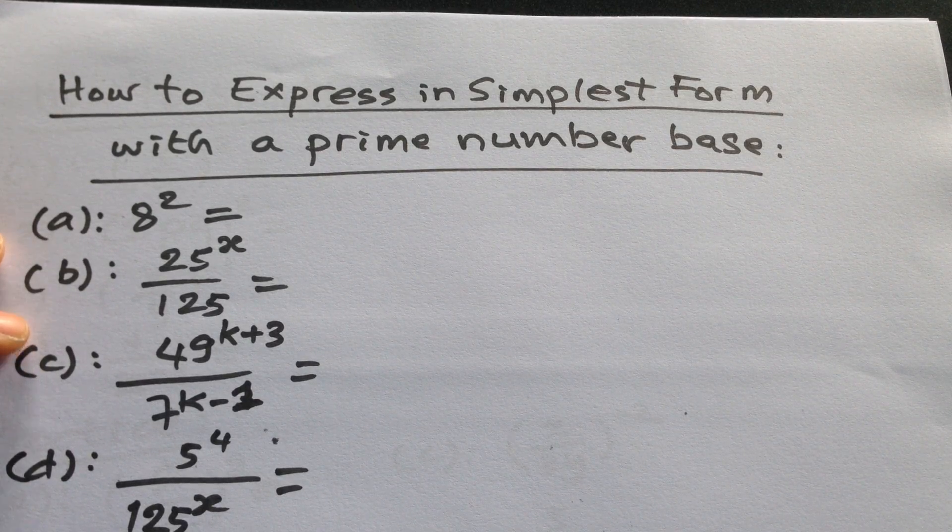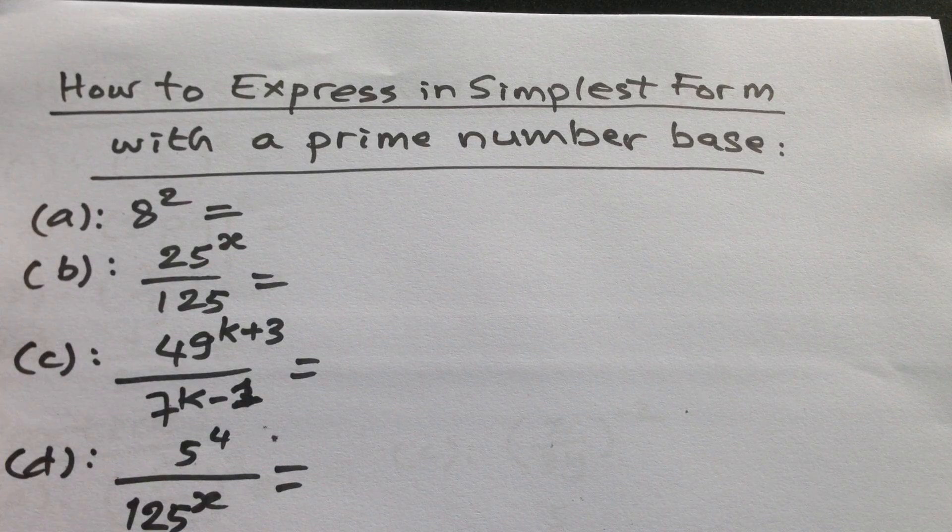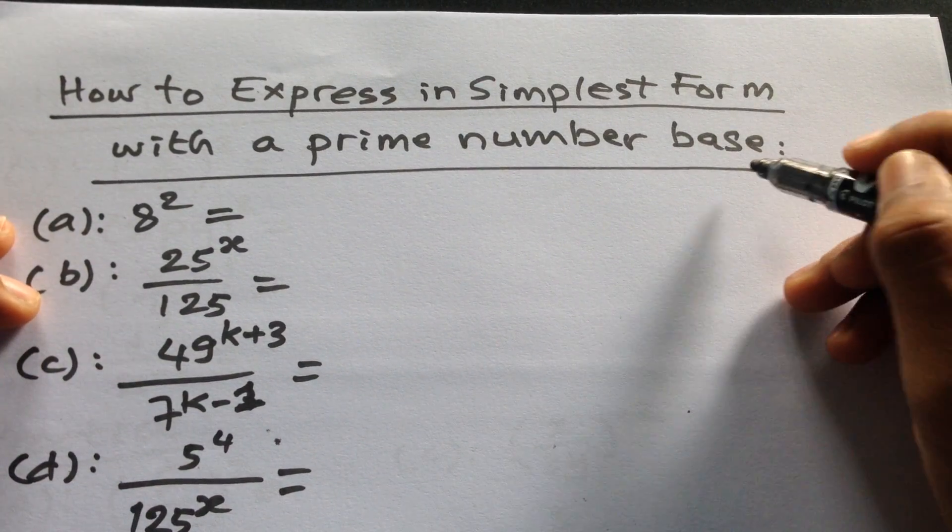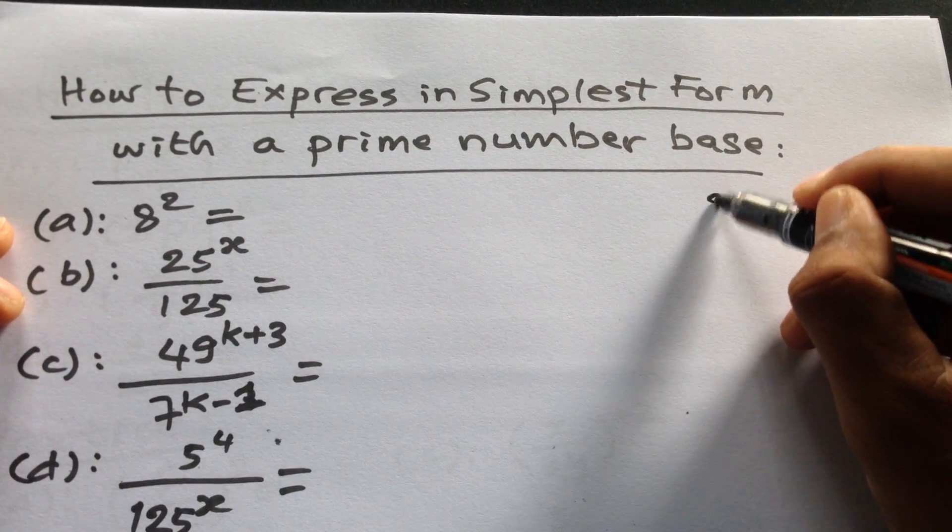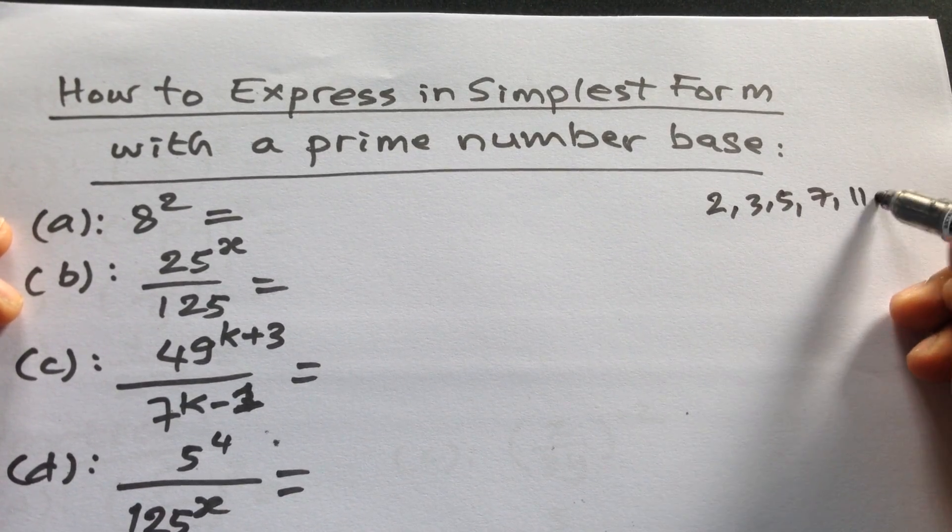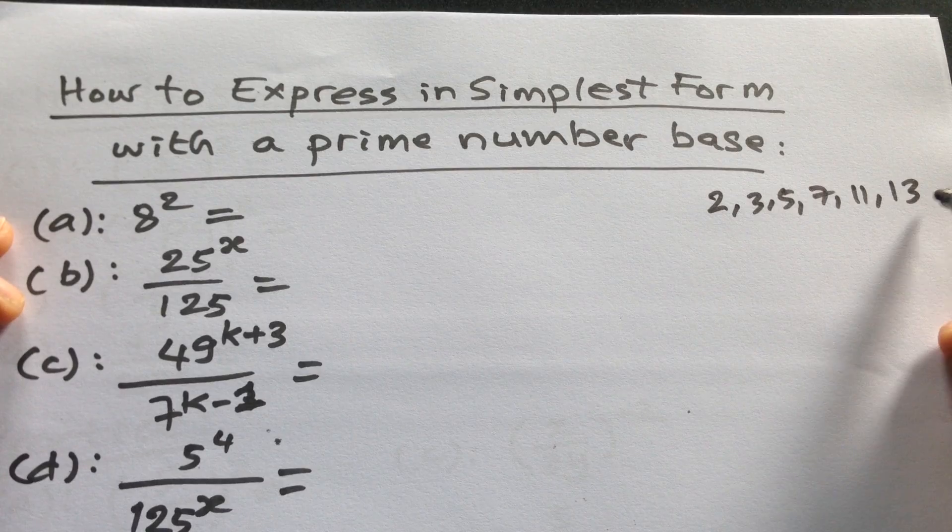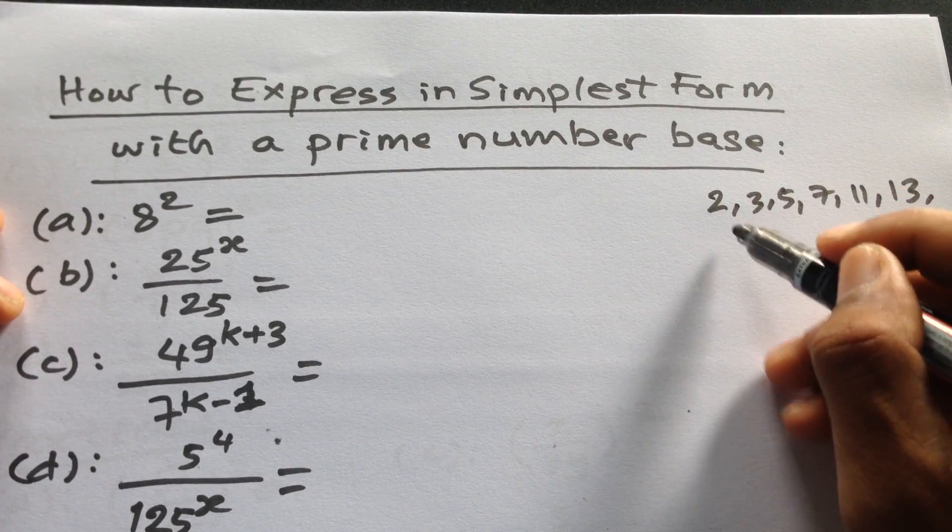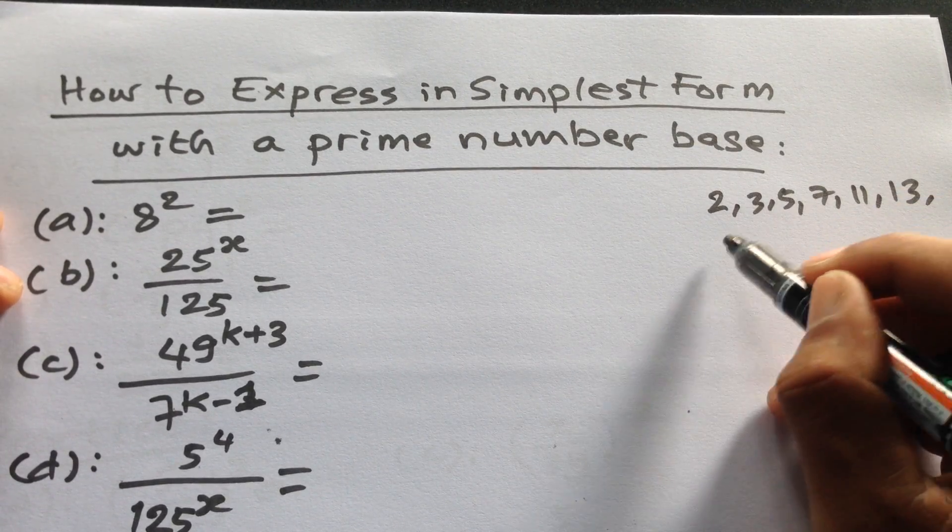We would like to know that the prime bases are 2, 3, 5, 7, 11, 13, and so on. These are the prime numbers. Just like the example here,